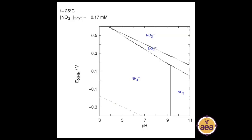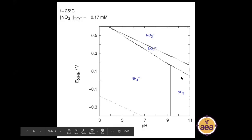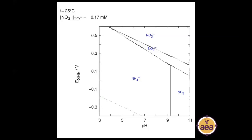Now let's look at nitrogen. With nitrogen, you have the oxidized form — nitrate — versus the reduced form — ammonium. The oxidized nitrogen, nitrate, shows up on the upper right of the chart, and ammonium shows up on the lower left. We also have ammonia as a gas (NH₃) showing up on the far right, and nitrite in between.